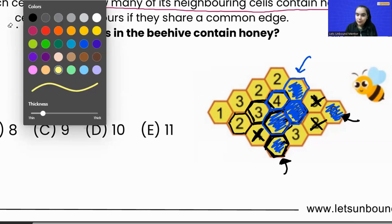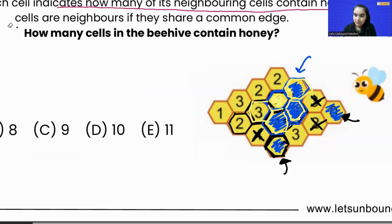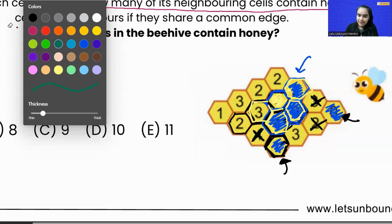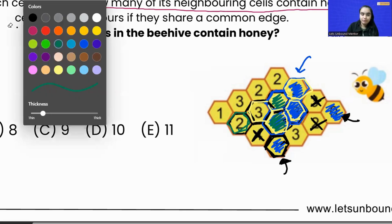Now if we check this other number four, it is surrounded by one, two, three, and a fourth cell — so four of its neighboring cells contain honey. That means this is also sorted. And if we see number three, it is also surrounded by three cells: one sharing a common edge here, this one, and this one. So far all numbers are cleared.